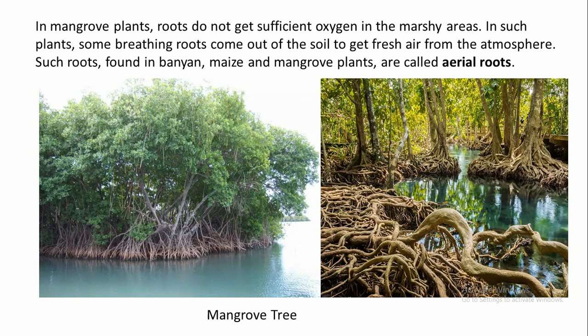Now let us see what mangroves are. Mangroves are tropical evergreen trees or shrubs that grow in shallow coastal water. Here you can see mangrove trees where the roots are easily visible.